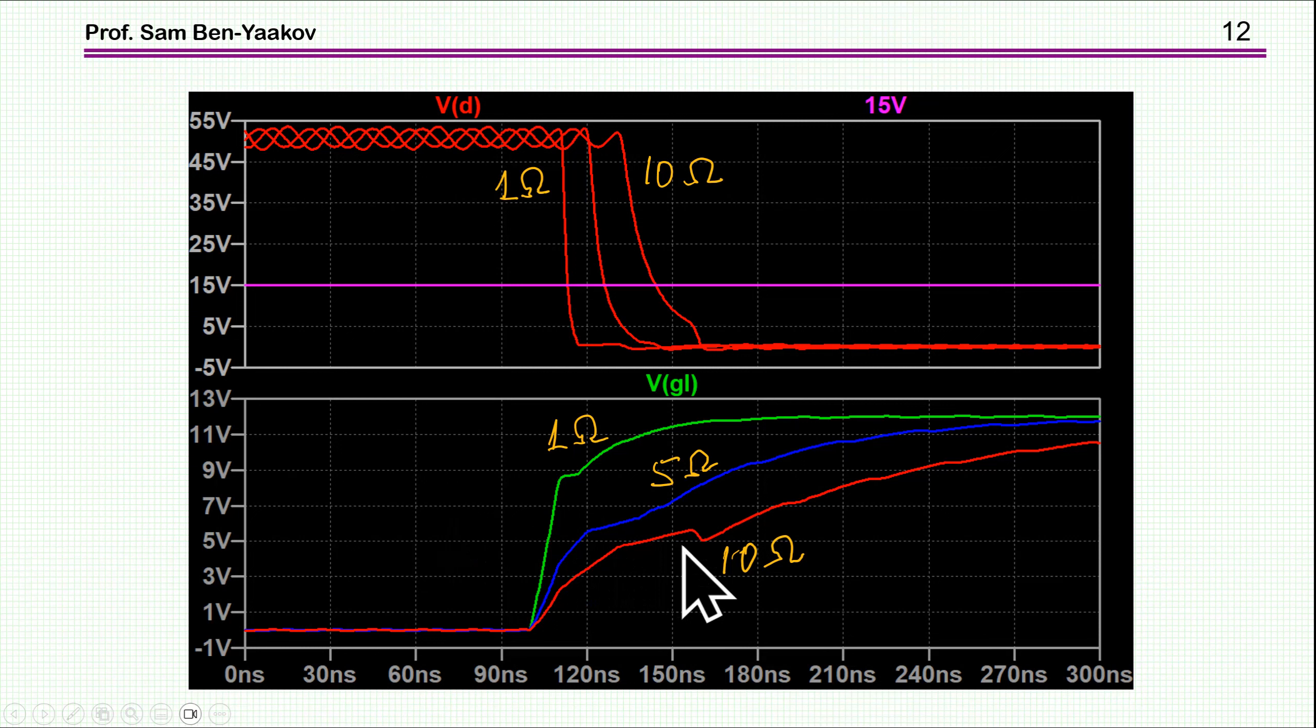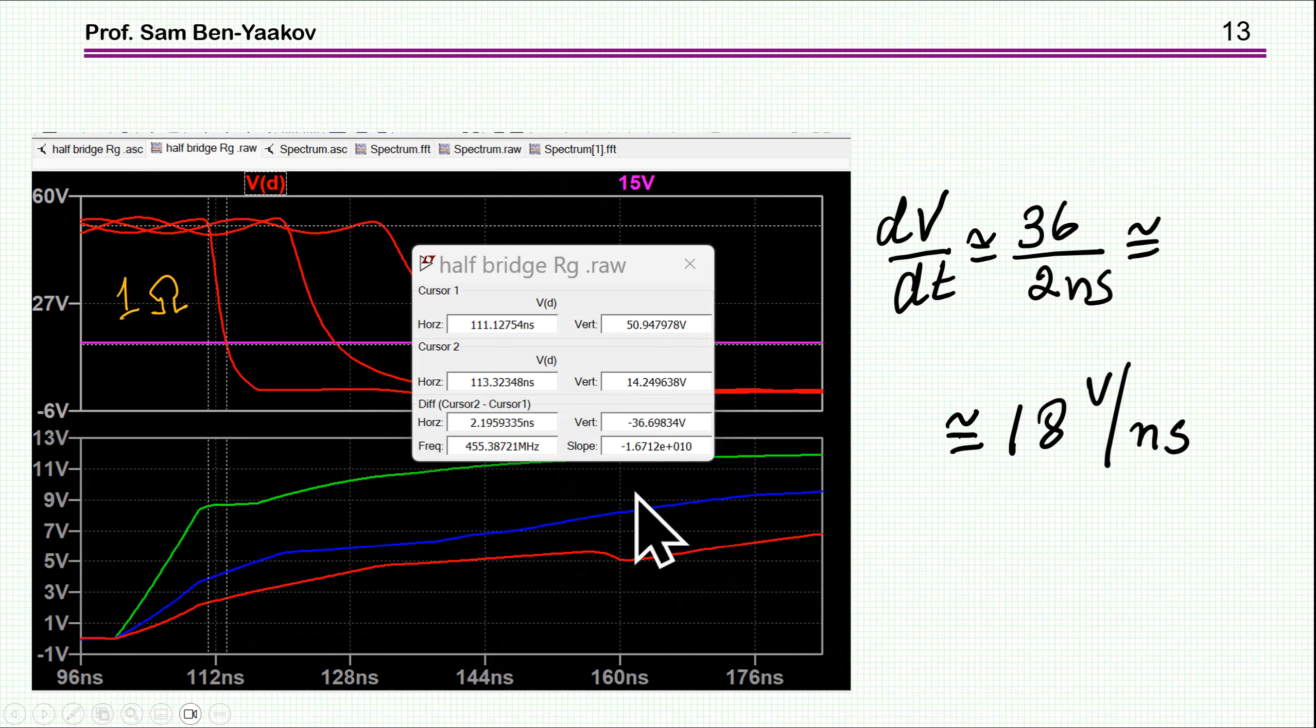So here I'm showing three cases, three resistances, 1 ohm to 10 ohms. This is the drop and this is the gate voltages. Let's have a look, zoom in and see, this is the 1 ohm. You see this drop here. Well there is some non-linearity here, I'm not going into it. Let's just talk about this part here.